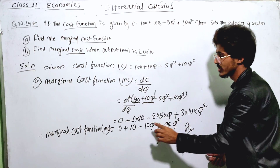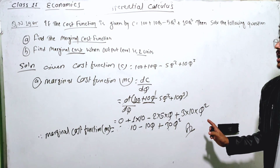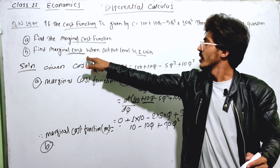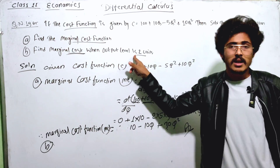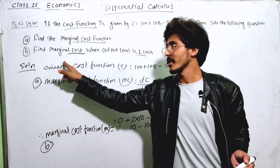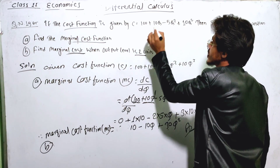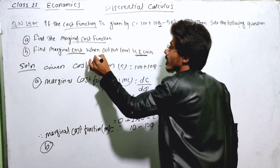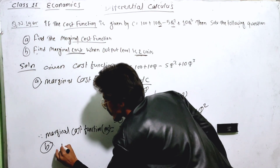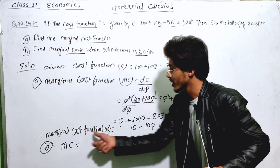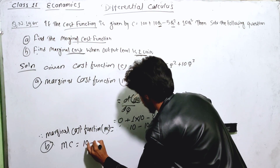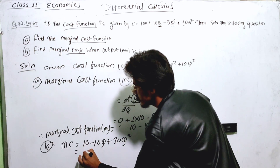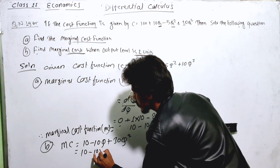The marginal cost function MC is confirmed as the answer. Now for Part B: find the marginal cost when the output level is 2 units. Output of 2 units means Q is equal to 2. We substitute into the marginal cost equation MC equal to 10 minus 10Q plus 30Q squared.